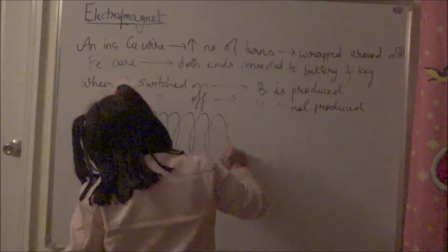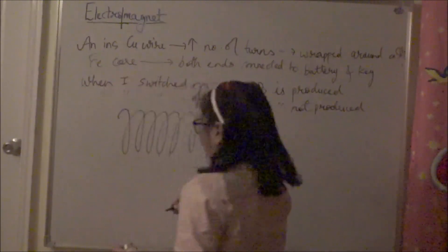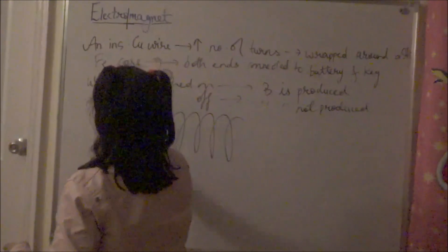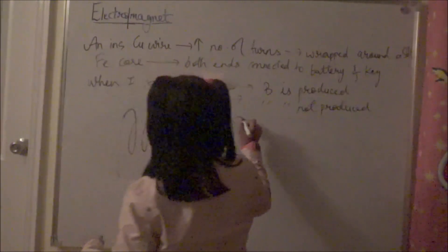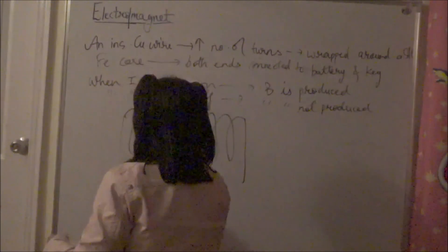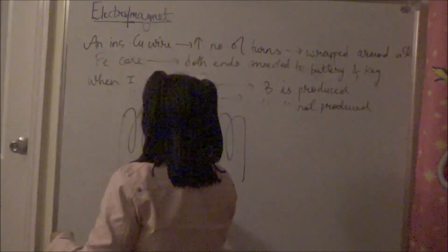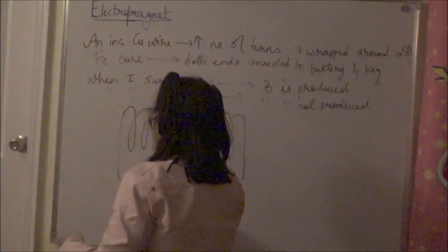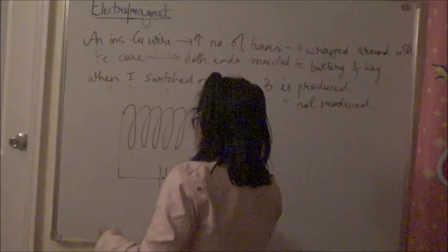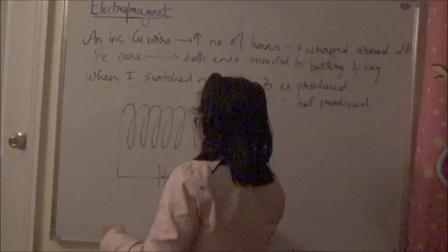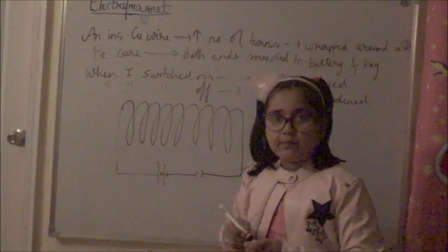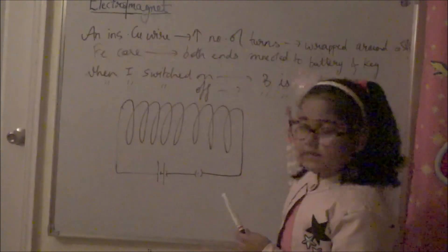Both ends of this wire are connected to a cell or battery and to a key. The current flows from the positive terminal to the negative terminal of the battery.